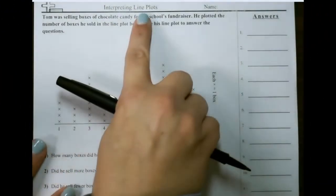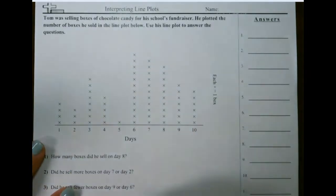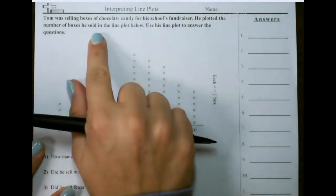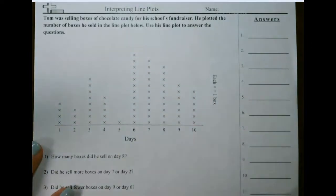Let's take a look at interpreting line plots. Tom was selling boxes of chocolate candy for his school fundraiser. He plotted the number of boxes he sold in the line plot below. Use his line plot to answer the questions.